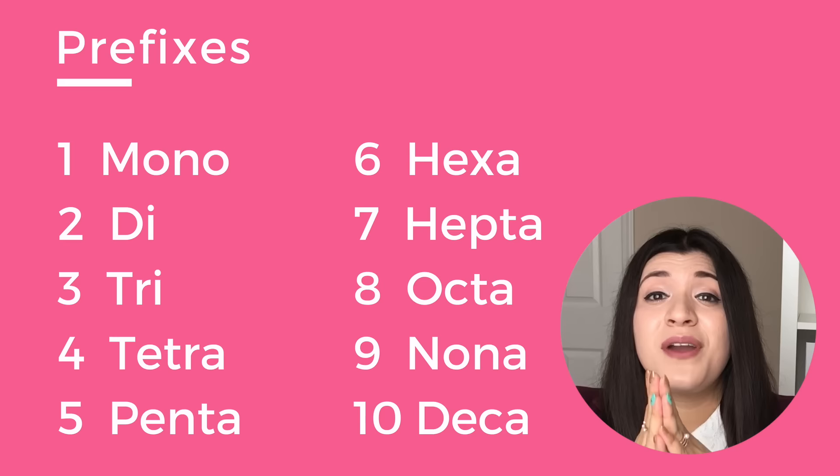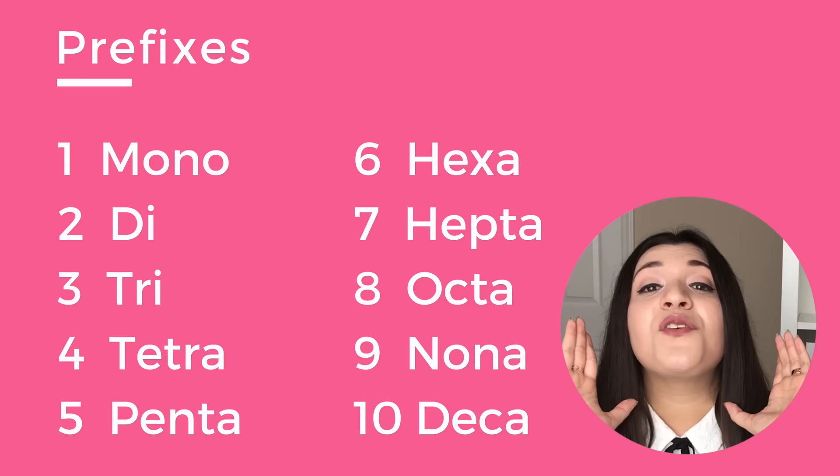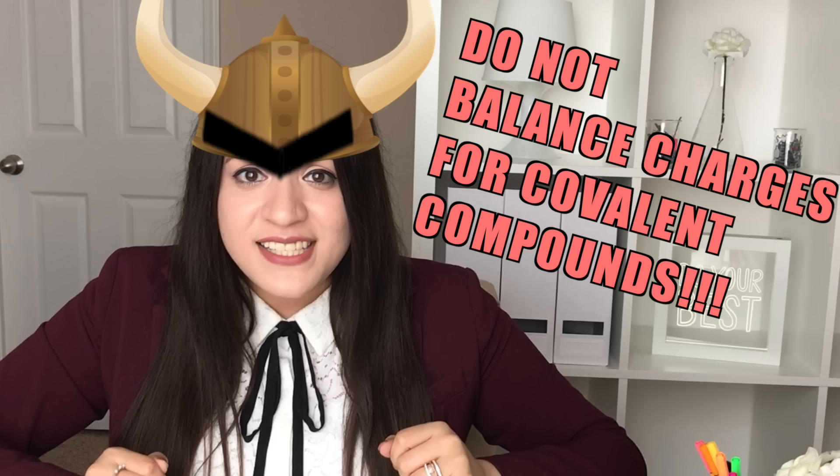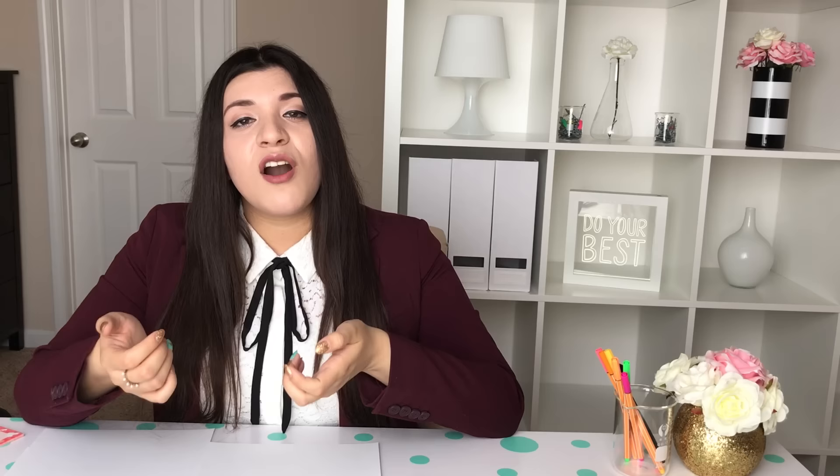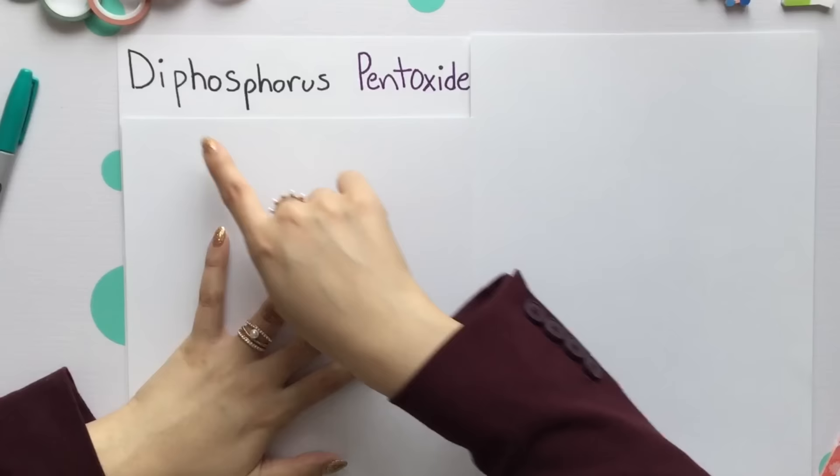Those are all the different types of combinations for ionic compounds. Moving on to covalent or molecular compounds. Something we have to know are the prefixes. Know 1 through 10 because you do not have to balance any charges. I repeat, for covalent compounds do not balance charges.